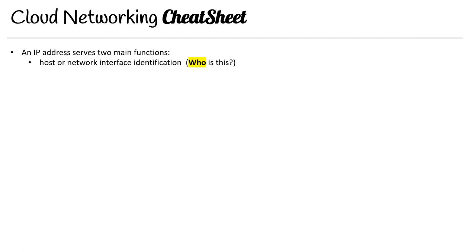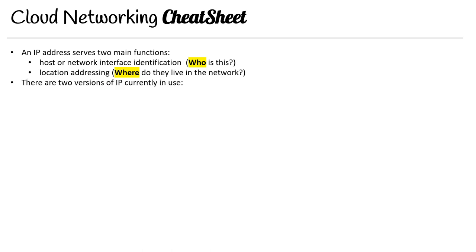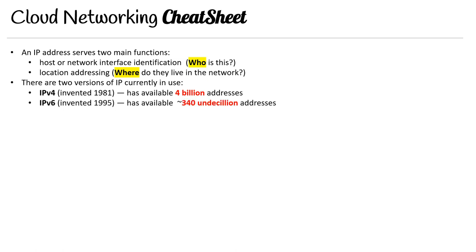An IP address serves two main functions: host or network interface identification — so who is this — and location addressing — so where do they live on the network. There are two versions of IP currently in use: IPv4, where there are only 4 billion addresses, and IPv6, where there are 340 undecillion addresses. Even though IPv6 is more modern, we still use IPv4 because it's just easier to work with, but at some point we'll make the switch over to IPv6.